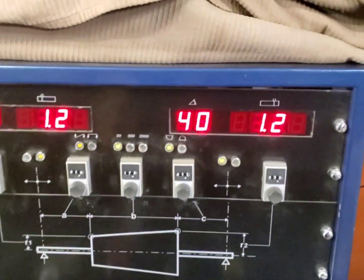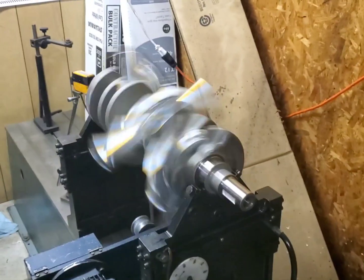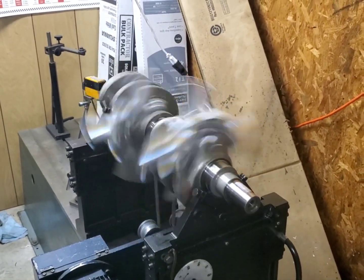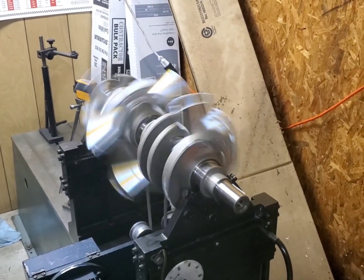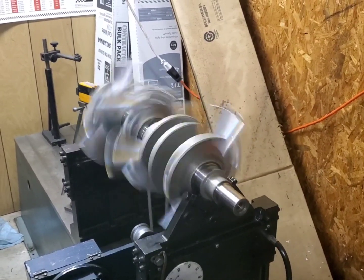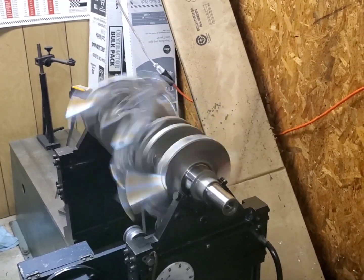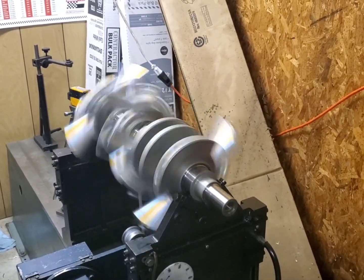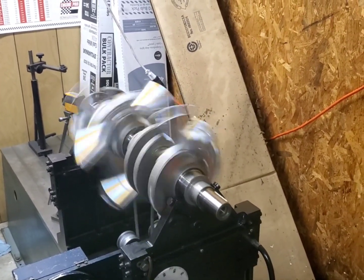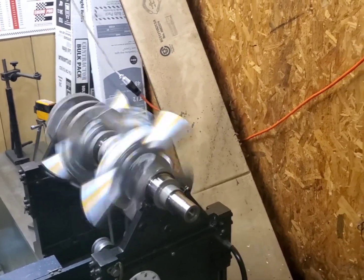There you go. 426 Hemi Crank. If you guys like this video, like and subscribe. This is a Molnar Crankshaft. Molnar, they didn't pay me for this, but we mic'd this crankshaft. The crankshaft was absolutely perfect. The balance is perfect. And we're happy.